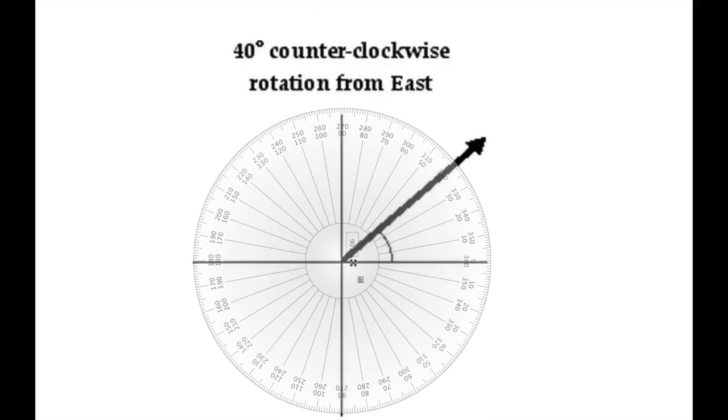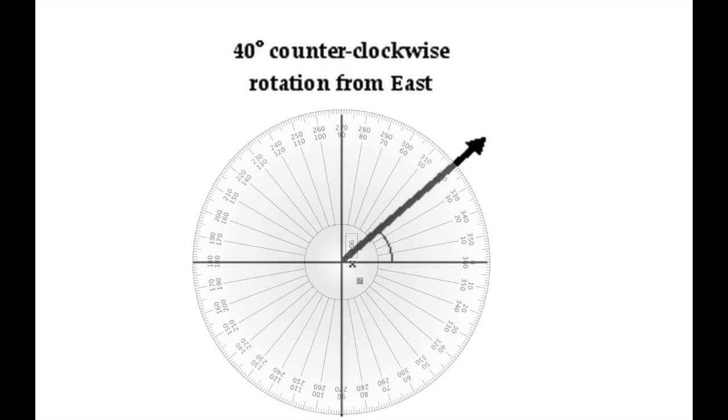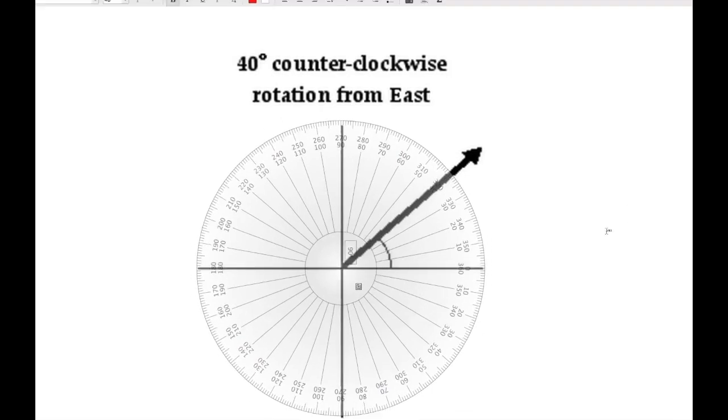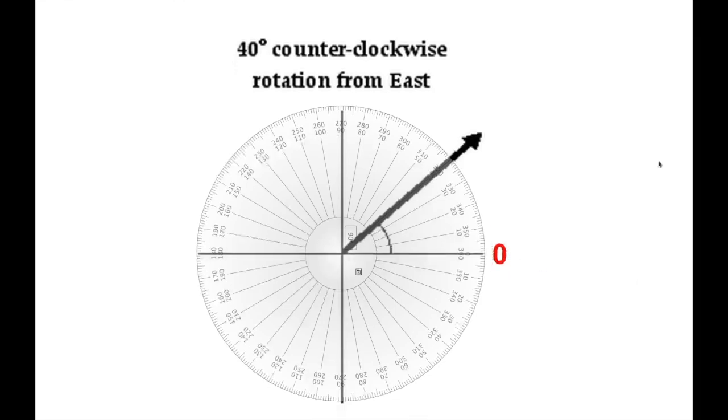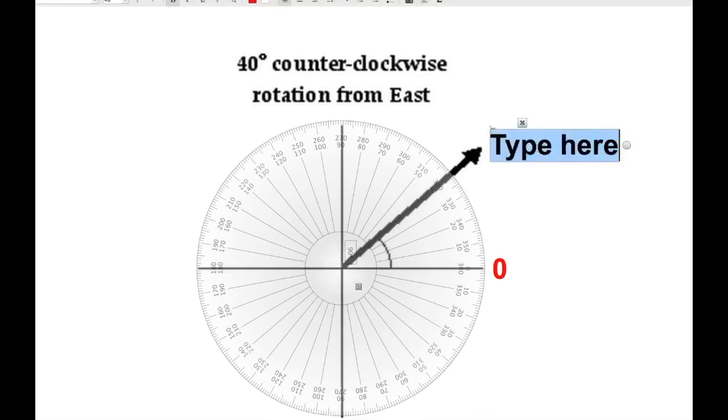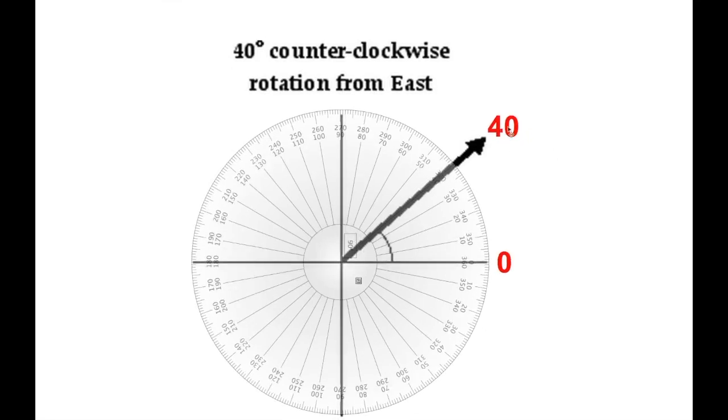So this vector right here, for instance, we could talk about it being a certain number of Newtons at a direction of 40 degrees. Because of our zeros here, we count up: we have 10, 20, 30, 40 degrees counterclockwise. So that vector can be expressed as 40 degrees counterclockwise rotation from east. And we can just simply give its direction as 40 degrees.